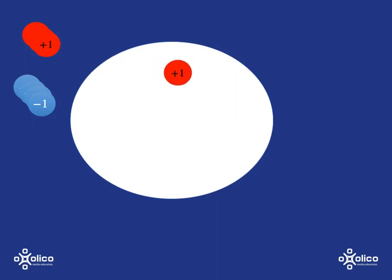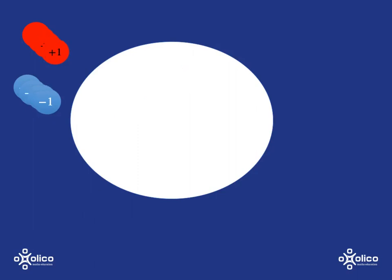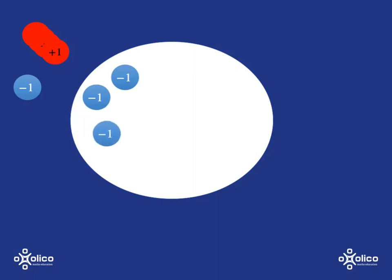If we go ahead and pop two hot disks into the pot, the temperature in the pot is now going to be plus two. If instead we put in three cold disks, the temperature in the pot is going to be negative three.